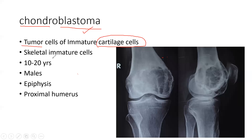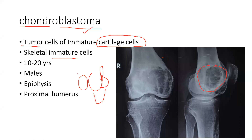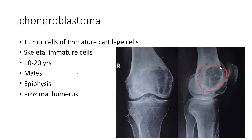Chondroblastoma occurs in skeletally immature young age, 10–20 years. It is an epiphyseal tumor. If you see any cartilage in a tumor on X-ray, you will see a mottled appearance — irregular, not well defined, like a woolen ball tangled inside bone.